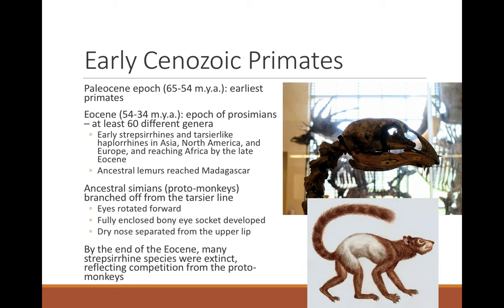In the Paleocene, the earliest primates appear towards the end, around 55 million years ago. In the Eocene, from 54 to 34 million years ago, there were 60 different genera of prosimians — tarsier-like, loris-like, and modern lemur-like groups. North America had primitive tarsiers and proto-lemur species like Cope lemur, found in New Mexico. They reached Africa by late Eocene, where they persisted longer because Africa remained warm and wet. Ancestral lemurs also reached Madagascar during this time before it had moved away from Africa.